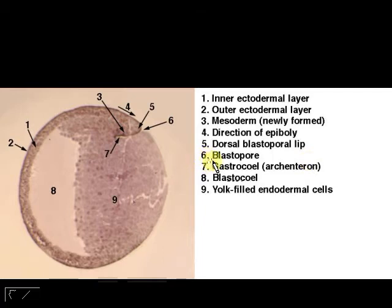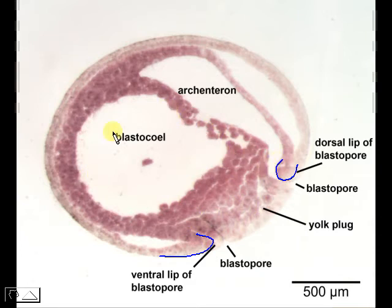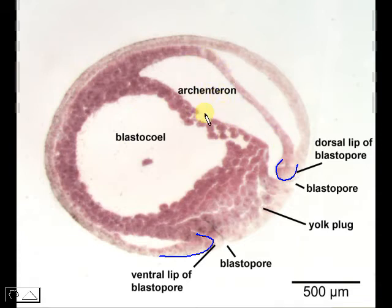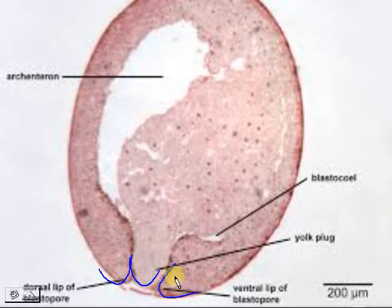In early gastrula, you see the formation of the dorsal lip of the blastopore, and the cells that will eventually become mesoderm. The blastocele is still present. Moving to mid-gastrula, you can see the blastopore and ventral lip forming as the vegetal pole is pushed inside. The blastocele is slowly pushed aside to make way for the archenteron. In late gastrula, the archenteron is established, the blastocele is reduced, and you can see the yolk plug along with the dorsal and ventral lips of the blastopore.